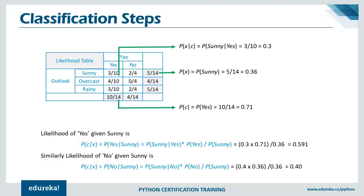For each frequency table we generate a likelihood table, which contains the probability of playing on a particular day. Taking the outlook attribute with class labels yes and no: the probability of sunny given yes is 3/10 = 0.3, the probability of sunny is 5/14, and the probability of yes is 10 out of 14. Using Bayes' Theorem, the likelihood of yes given sunny equals P(sunny|yes) × P(yes) / P(sunny), which gives 0.59. Similarly, the likelihood of no given sunny is 0.40.